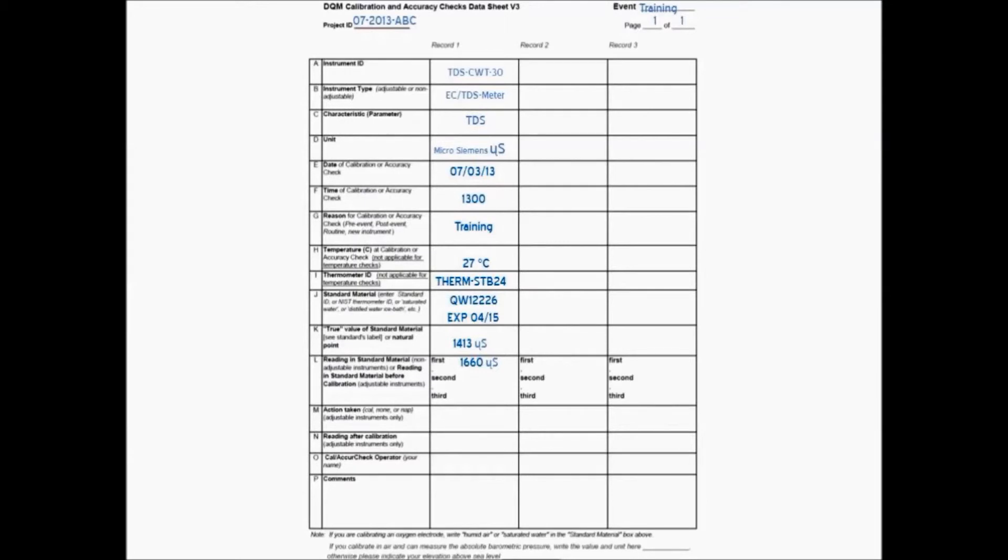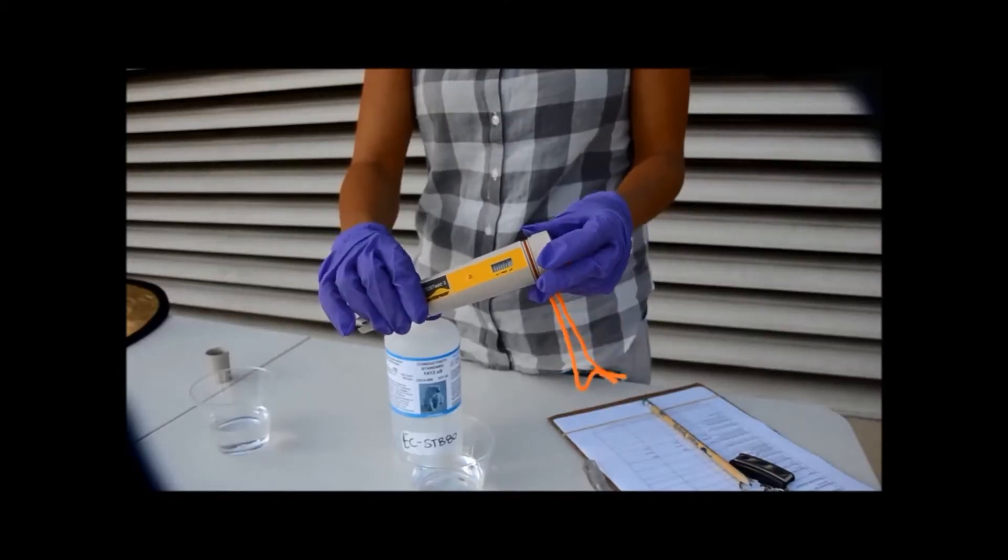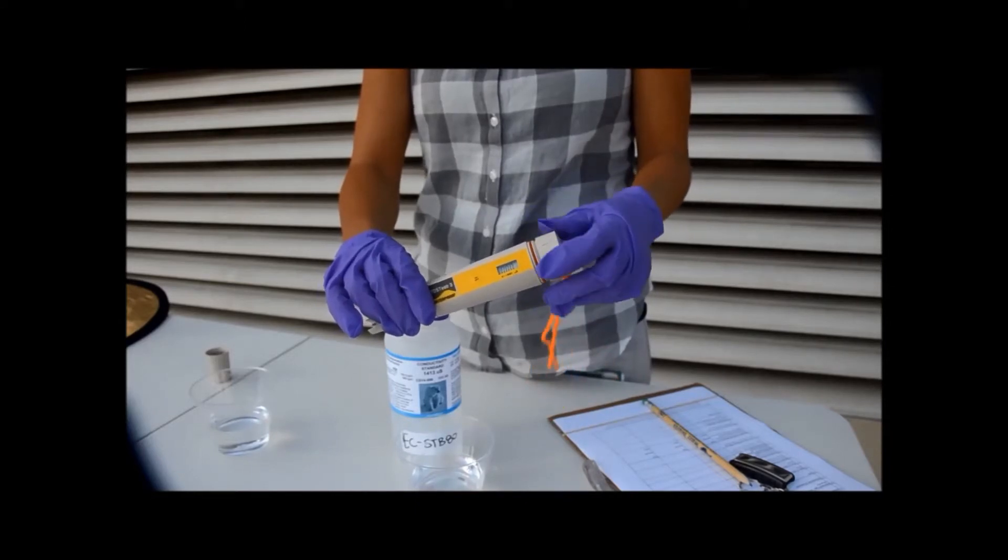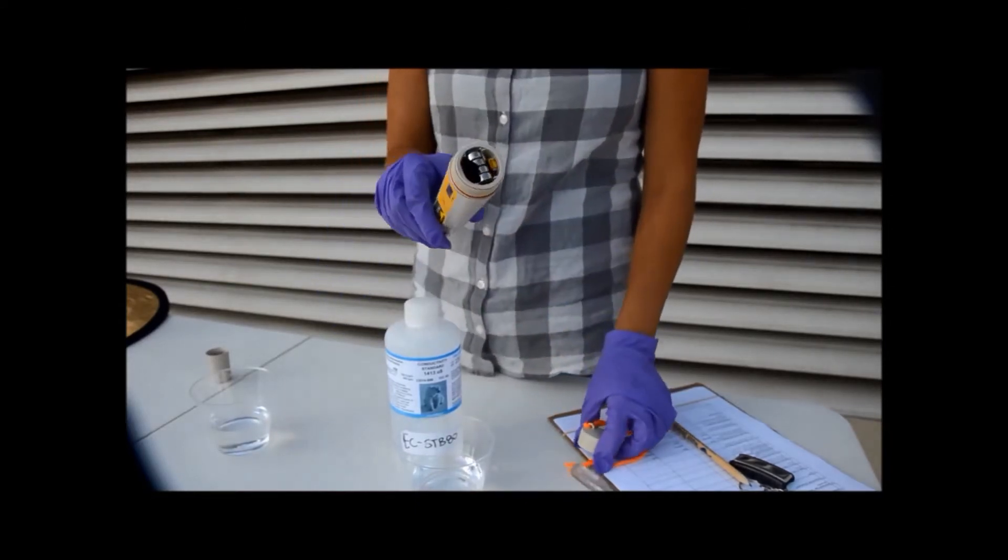Some of the older TDS meters have an adjustment screw. Others use buttons. Adjust your meter so that the output has the same value as your calibration solution.